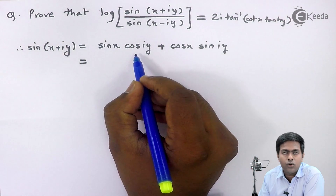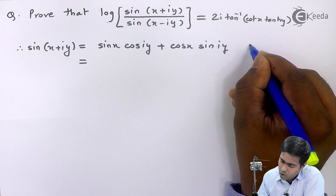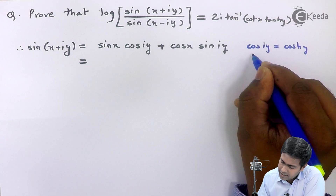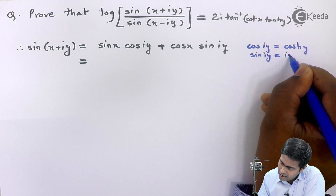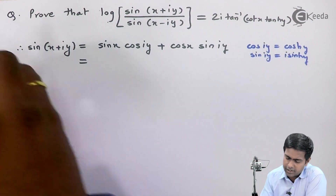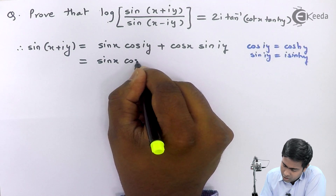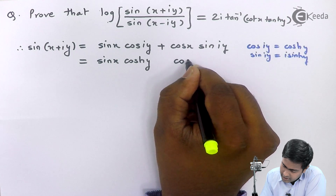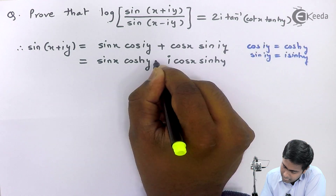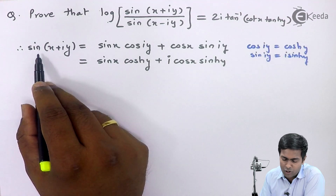Now we use the relationship between hyperbolic and circular functions. We know that cos(iy) = cosh y and sin(iy) = i sinh y. Applying these two results, we get sin(x+iy) = sin x cosh y + i cos x sinh y.